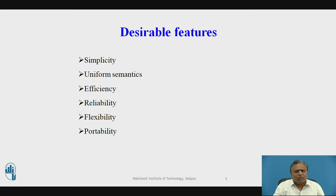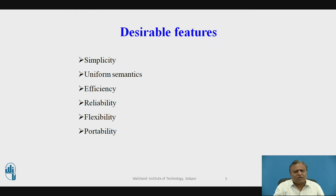The desired features of the message passing approach are: simplicity, uniform semantics, efficiency, reliability, flexibility, and portability. Simplicity means this approach is simple and easy to use, with clean semantics of the IPC protocol and its primitives. It is independent of heterogeneity — meaning different operating systems on different machines can still communicate successfully. It is also independent of the underlying network, so message passing supports all kinds of networks.